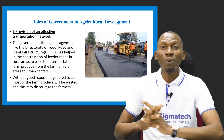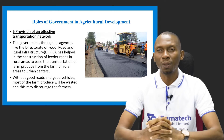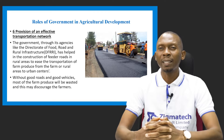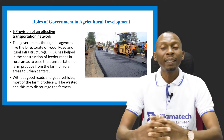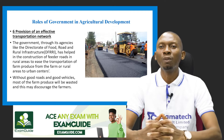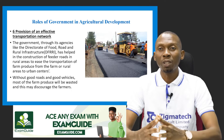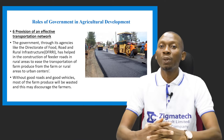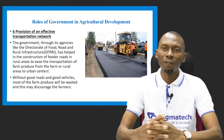The government also plays a role in the provision of an effective transportation network. Farms are usually located in rural areas and produce from these farms needs to be transported to the urban areas, so a good road network needs to be made available. Without good roads, most of the farm produce would be wasted and this could discourage the farmers.